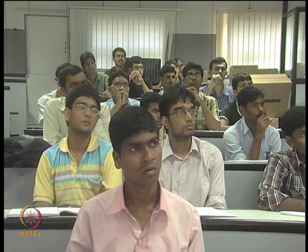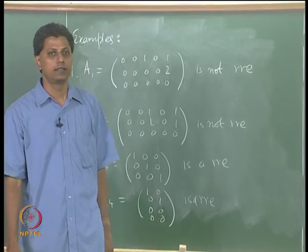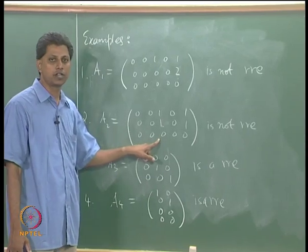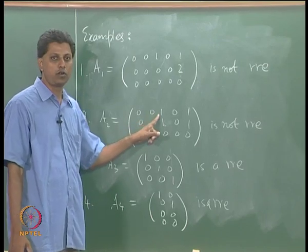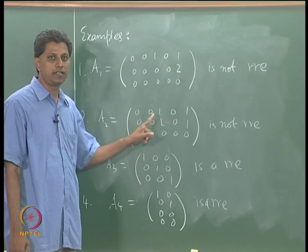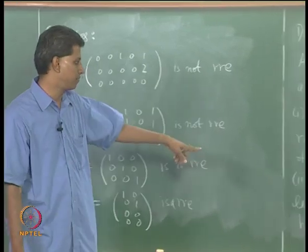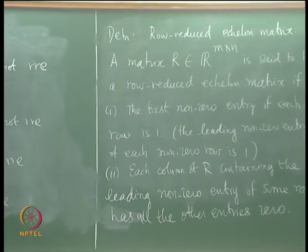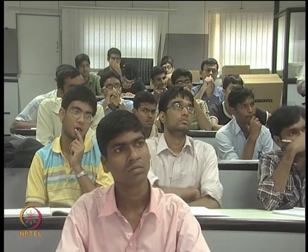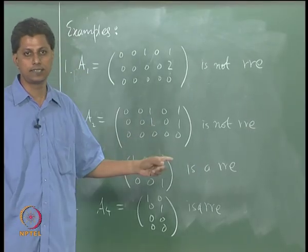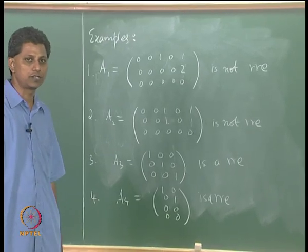Clarifying example A1: it is not a row reduced echelon matrix because the leading nonzero entry of the second row is 2, not 1. For example A2, the leading nonzero entry of the first row appears in the third column, but the other entries in that column are not all zero — violating condition 2.